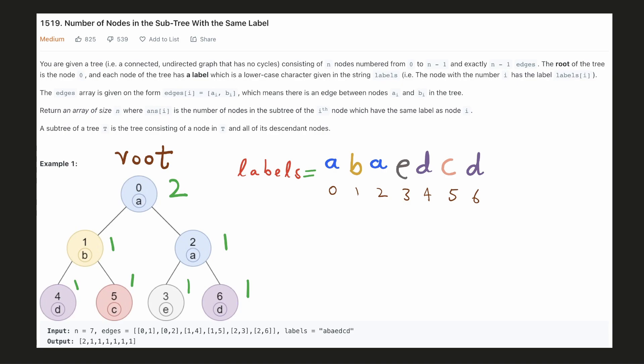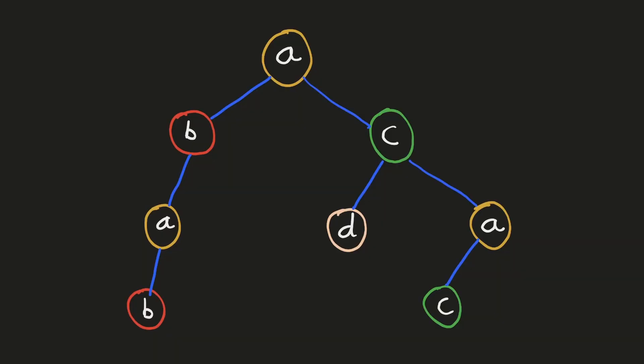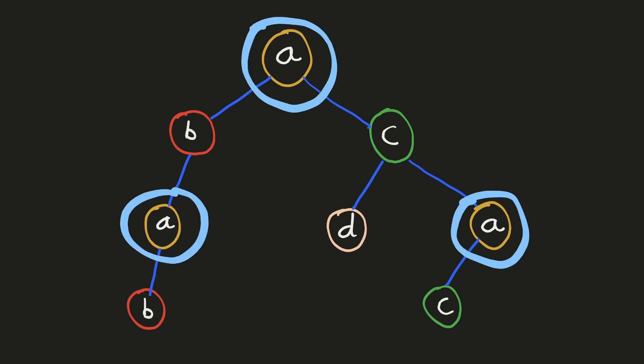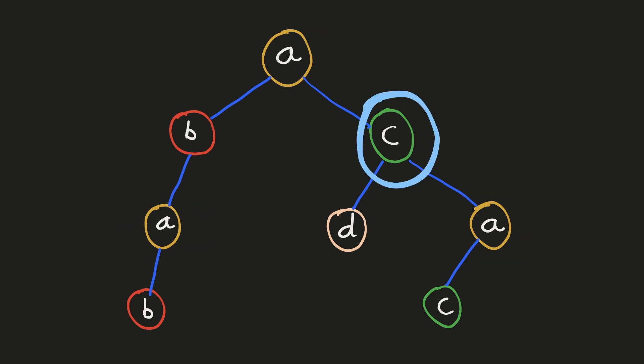Let's try to come up with an intuitive solution. We'll first come up with a solution that works using this example and later try to optimize it. When we look at this node, these will be the nodes in its subtree which are labeled the same, so the result for this node will be 3. Similarly, when we look at this node, there are two nodes in its subtree with the same label, hence the result for this would be 2.